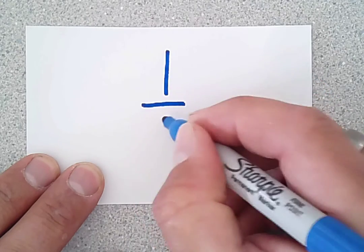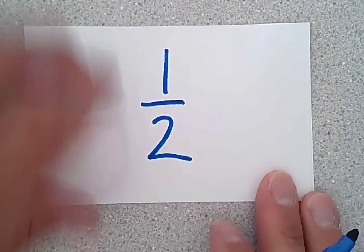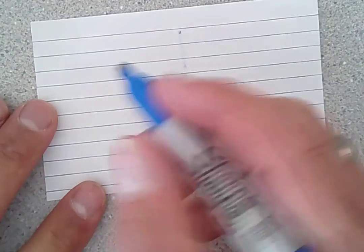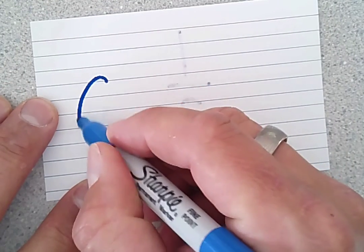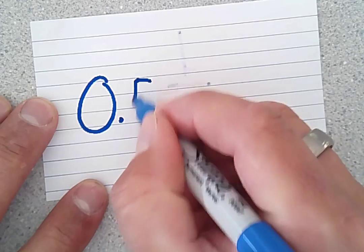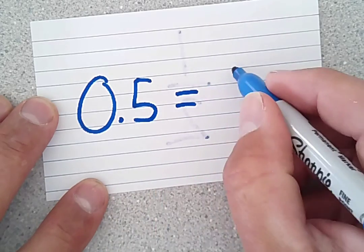I want you to put the fraction on one side. So in this case, the fraction is a half. And then on the other side, I want you to write down the decimal and the percent.